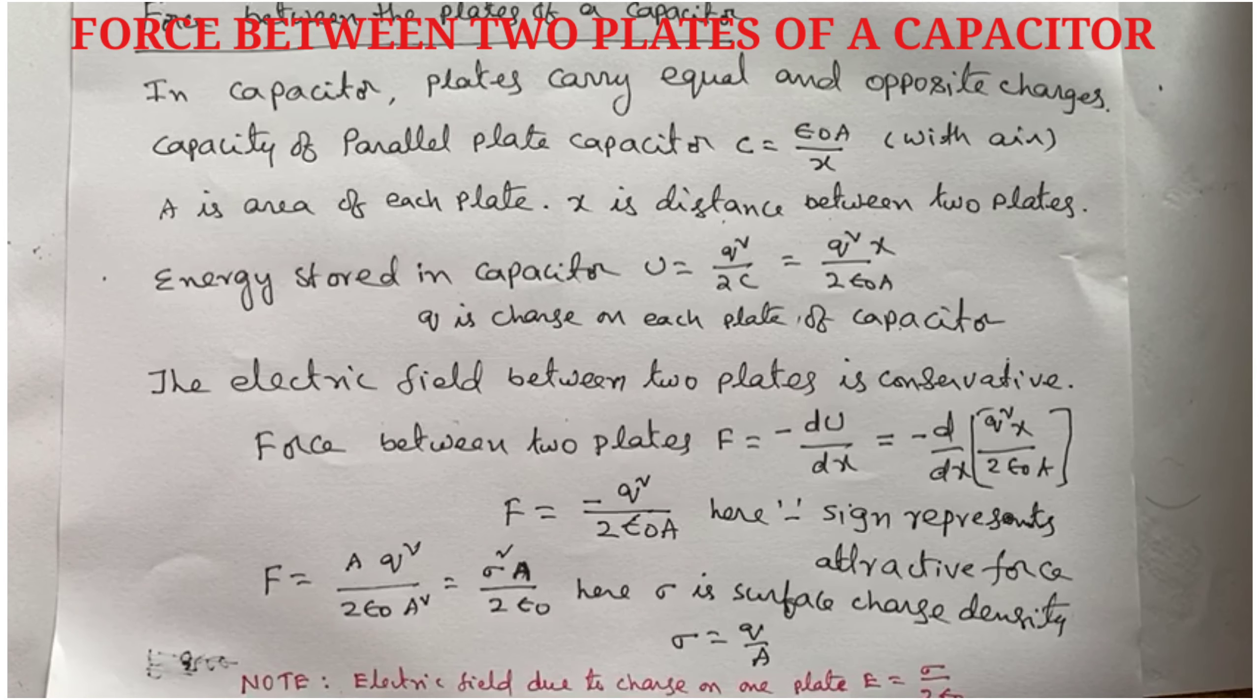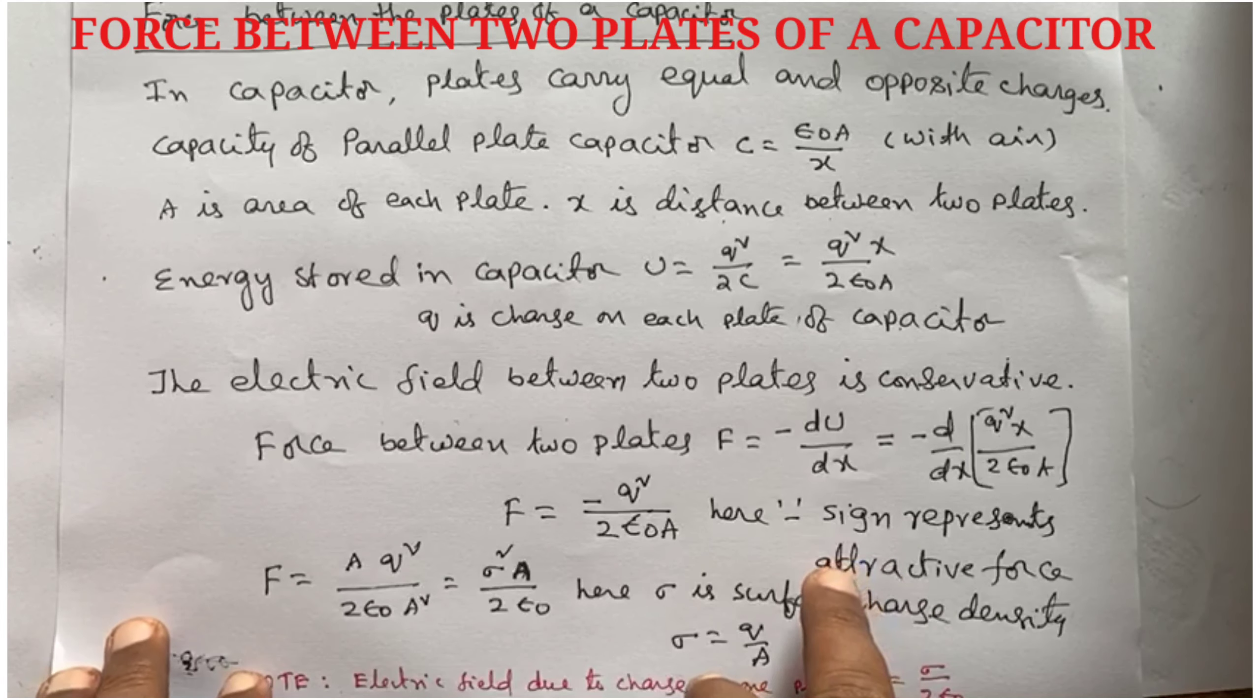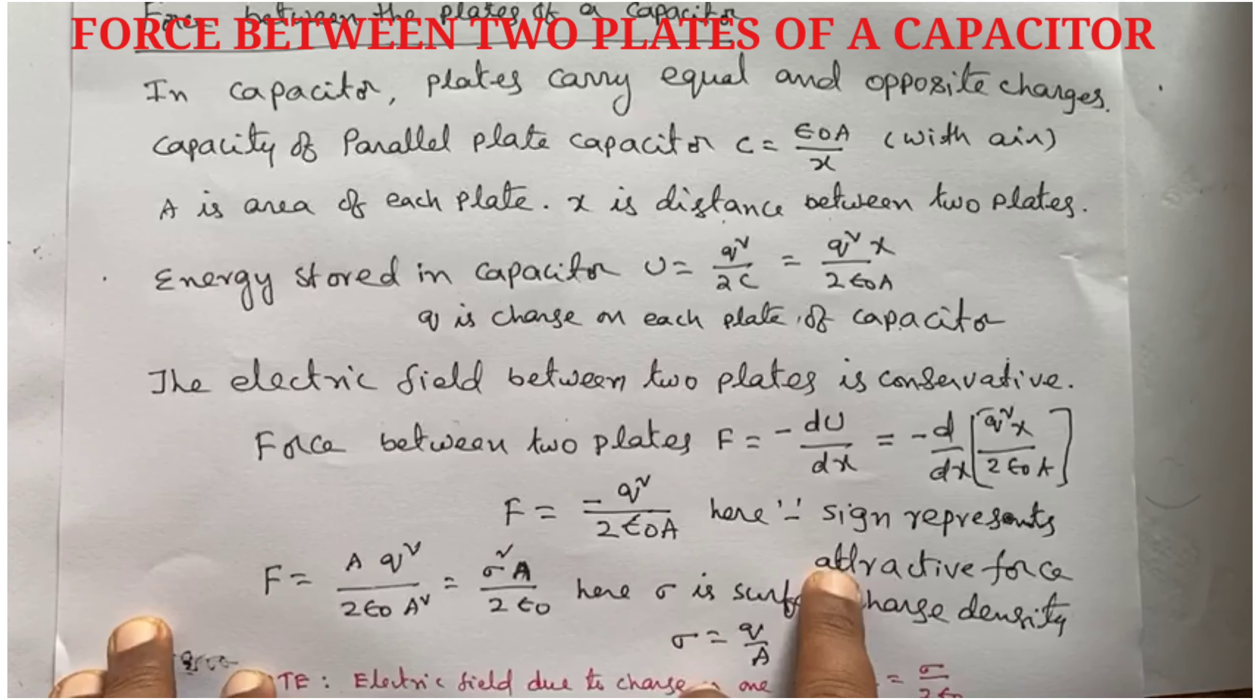Force between the plates of a capacitor: In a capacitor, plates carry equal and opposite charges. Capacity of parallel plate capacitor C equals epsilon not A by x, where x is the distance between the plates and A is the area of each plate.